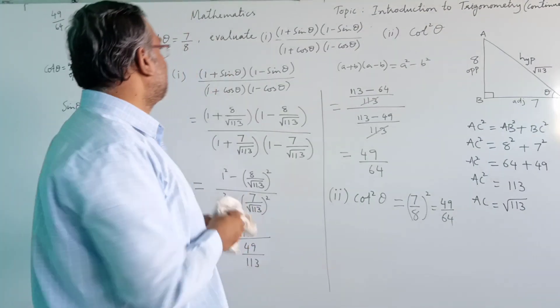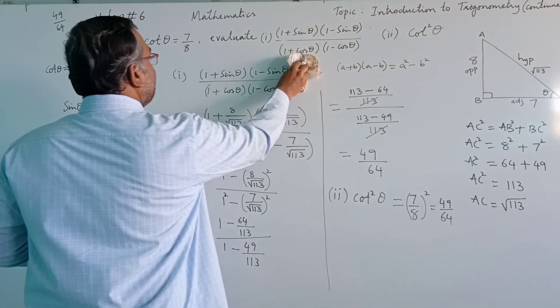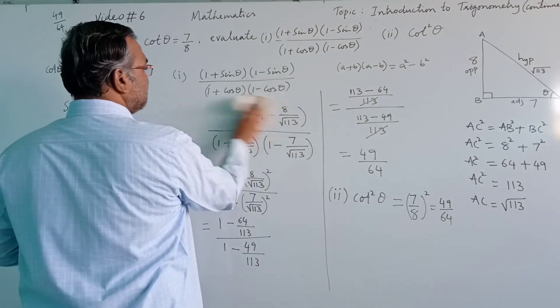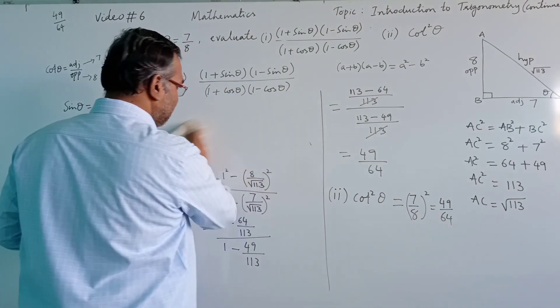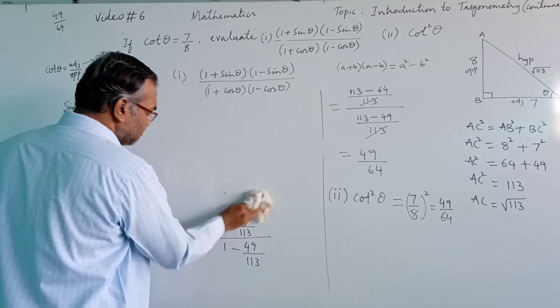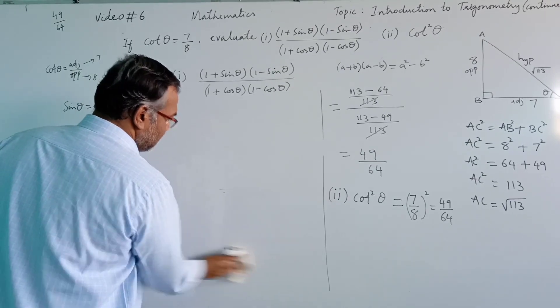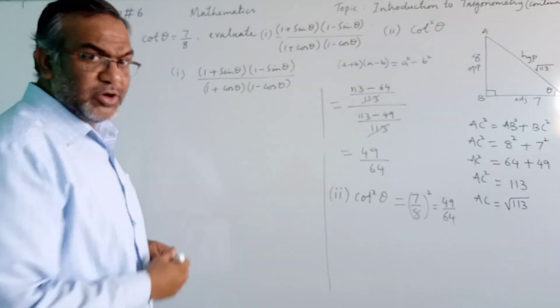The value of (1 plus sin theta)(1 minus sin theta) divided by (1 plus cos theta)(1 minus cos theta) is 49 divided by 64, and cot squared theta is also 49 divided by 64. Let's see why. Keep this in your mind: 1 plus sin theta — now if you observe it carefully, there is a reason both expressions give the same value.